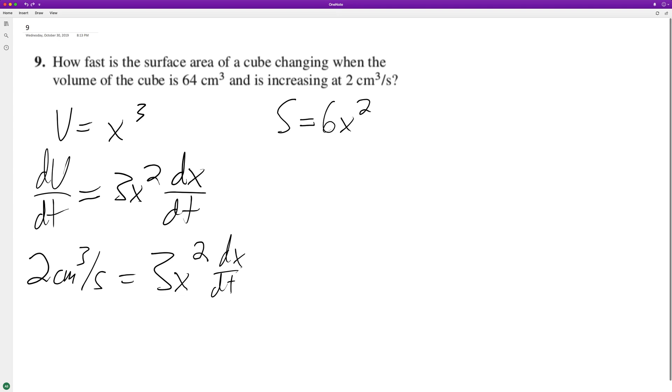So dx/dt is equal to 2 divided by 3x squared. So this whole thing.